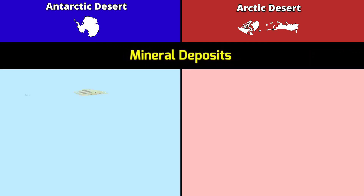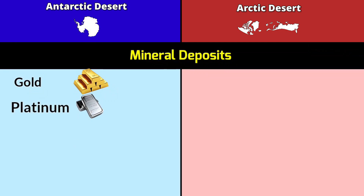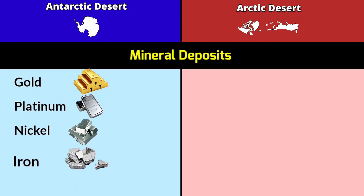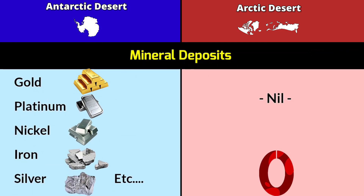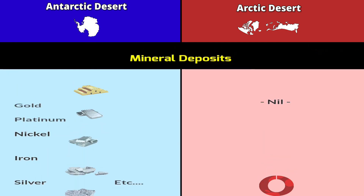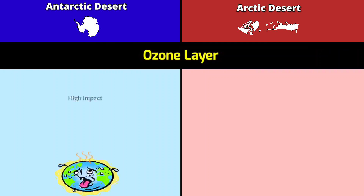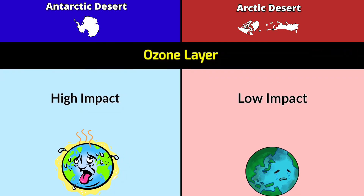Mineral deposits in Antarctica Desert include gold, platinum, nickel, iron, silver, and more. The Arctic Desert does not have any significant mineral deposits. Ozone layer: high impact on Antarctica Desert; low impact on Arctic Desert.